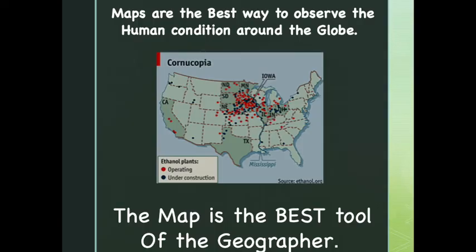So how do we address all these issues? This is quite a bit for one class to cover. We look at the best ways to address one function at a time, and sometimes it is important for us to look at more than one function at a time. We use maps. Maps are the best way to observe the human condition around the globe, and a map is the best tool of every geographer.